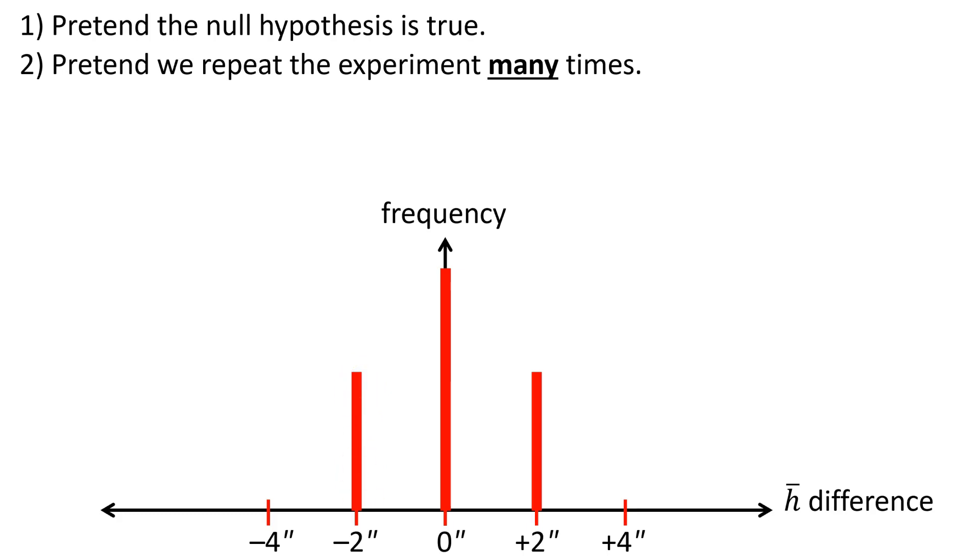And the null hypothesis will even admit, sometimes the experiment will give you an extreme outlier, like men are four inches taller. But that's very, very rare, because it's so hard to produce that outcome.